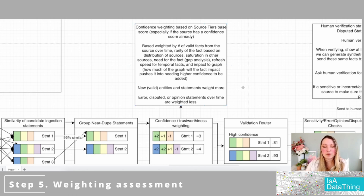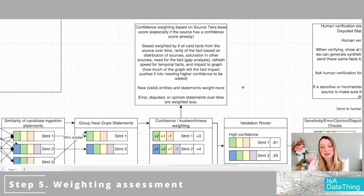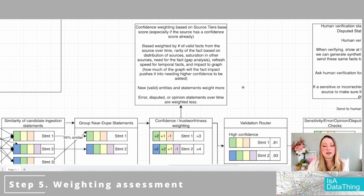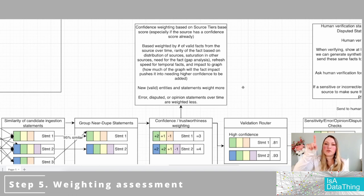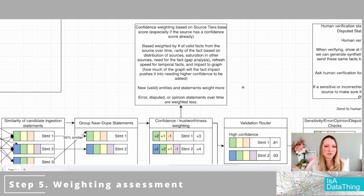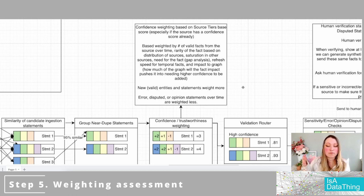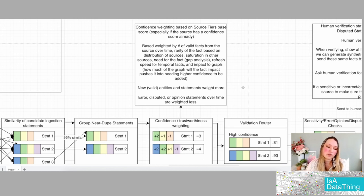Consider the impact on the graph itself — does adding something make certain algorithms unwieldy? New and valid entities and statements are weighted higher because you want the most up-to-date content coming in. Anything error-prone, disputed, or opinion-based should be tracked over time. After you've done this a few times, you'll start to see that some sources or statements show up with more errors or disputes — where there's no definitive yes/no on a statement — or they're opinion-based without evidence. You factor that into your trustworthy weighting over time.